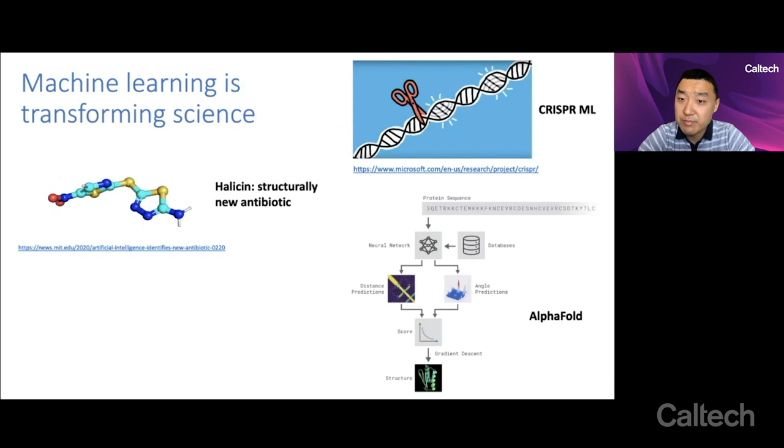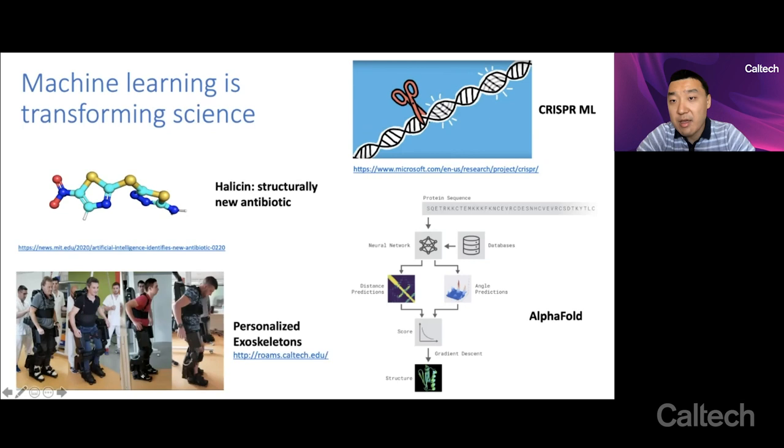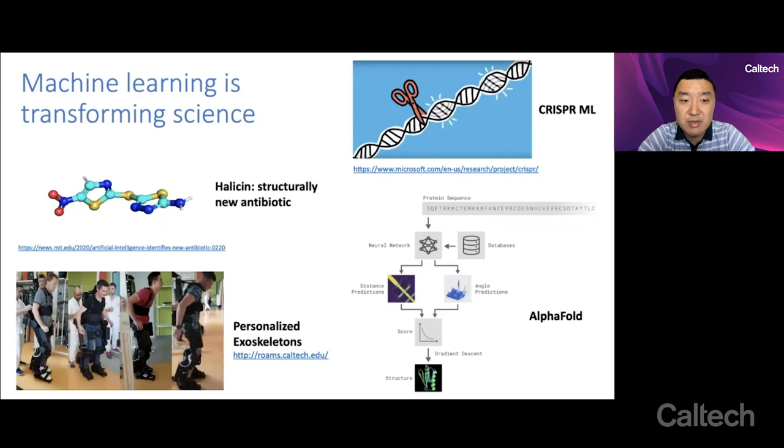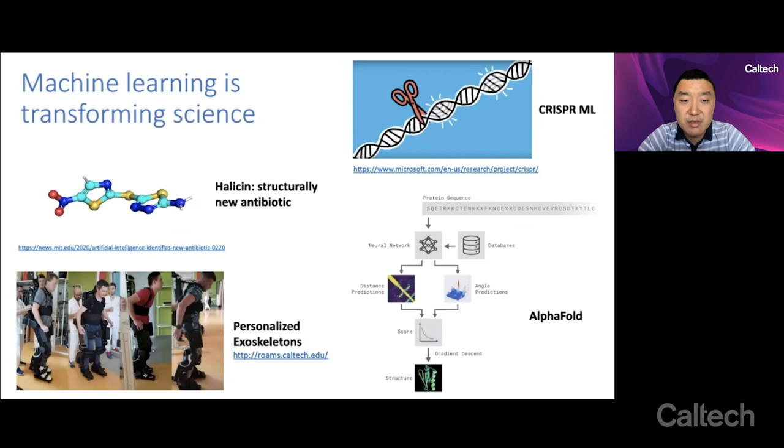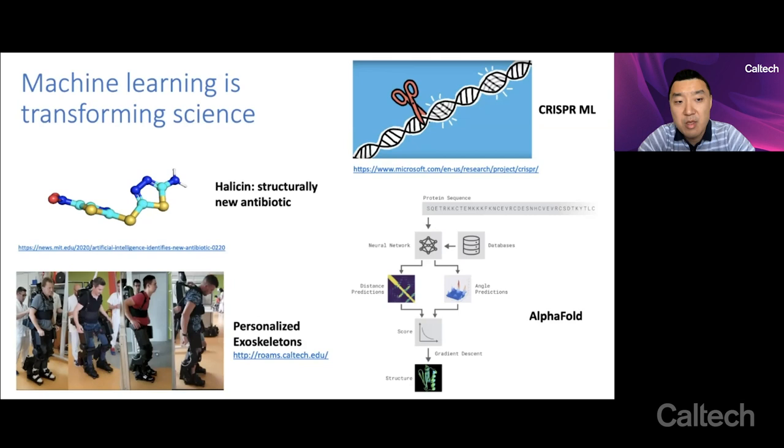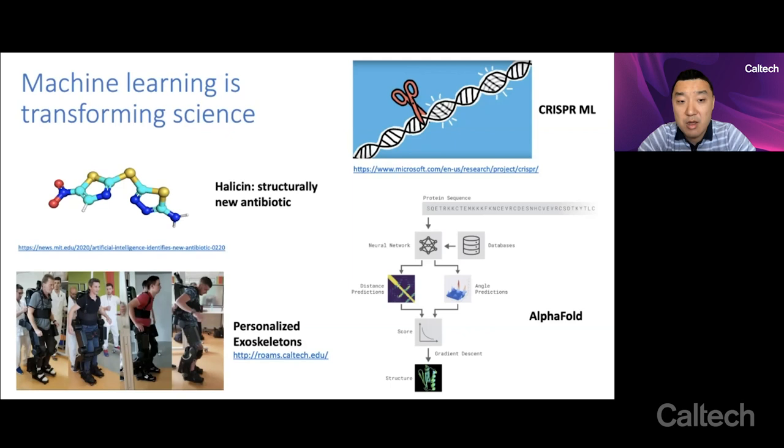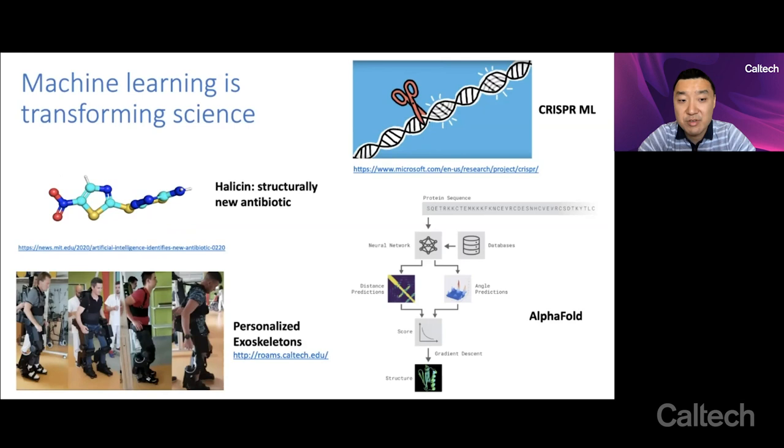which can now yield much more accurate 3D protein structures than can be done before. Here at Caltech, we've been using machine learning to personalize the gaits of lower body-powered exoskeletons, with the goal of providing rehabilitation for people suffering from paraplegia. You see in the video some demonstrations on paraplegic subjects, where the machine learning algorithms are personalizing to the comfort and preferences of each individual subject and how they would like to move.